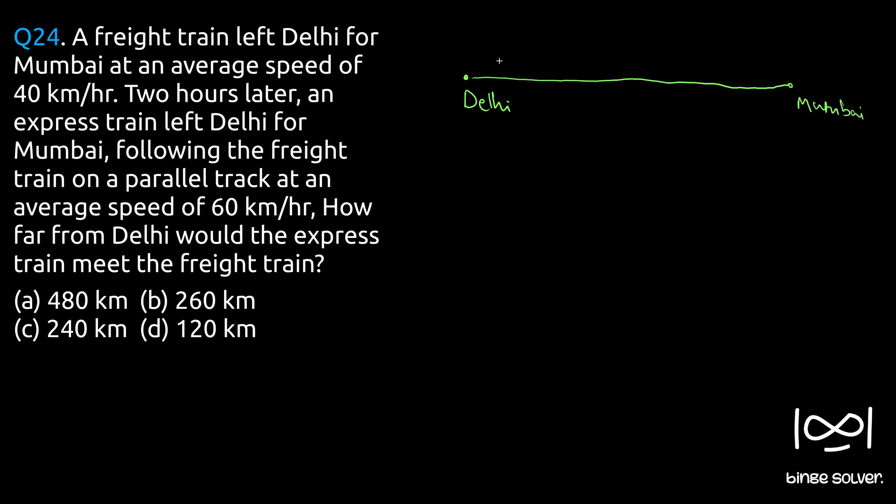Now it is given first a freight train traveled in this direction at 40 km per hour. Two hours later, so in two hours how much distance has this freight train covered? 40 km per hour it was traveling, so 40 to 80 km it has covered after two hours.